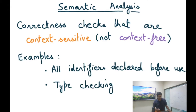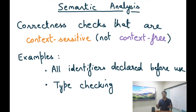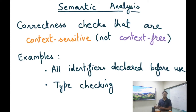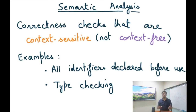Here are some examples of context-sensitive analysis. For example, all identifiers in the program are declared before use. This is context-sensitive because it's not just about whether something is an identifier, but also about what identifiers have been defined up to that point — that forms the context of the program at any program point. Similarly, type checking is a context-sensitive analysis, as we're going to see soon.